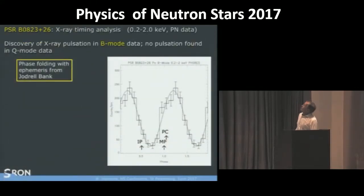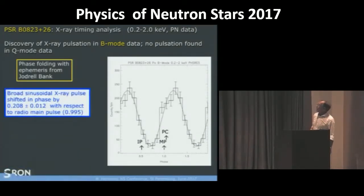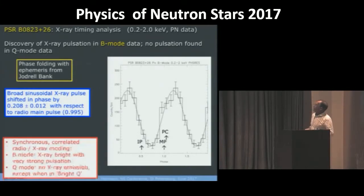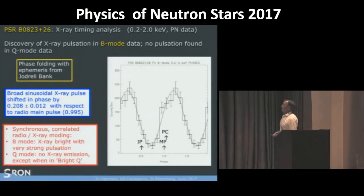We also discovered for this pulsar now, moding of pulsations in the bright mode. So this is the light curve. Here you have the main pulse, the post cursor and the interpulse. And now the X-ray is lagging by 0.2 in phase. Again, it's a broad profile. And from this, this is very exciting, that we have indeed now synchronous and correlated radio X-ray moding. In the bright radio mode, we have X-ray brightness with very strong pulsation. In the Q mode, we have no X-ray emission, at least with our statistics, except when we are in this bright Q mode.